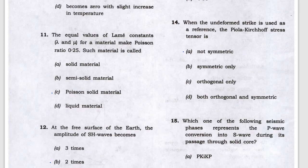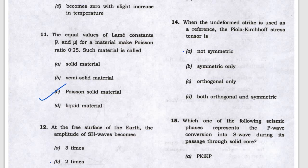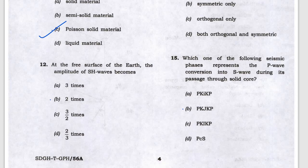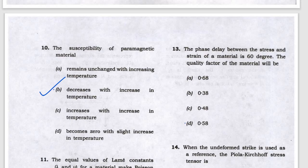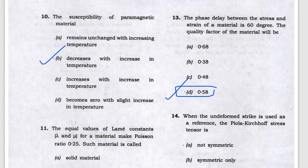Next, they are asking about Poisson solid materials — C will be the answer. For the free surface of the Earth, the amplitude of SH wave becomes most probably two times. Next, they are asking about strain material at 60 degrees — the quality factor answer is D, cot 60 degrees.